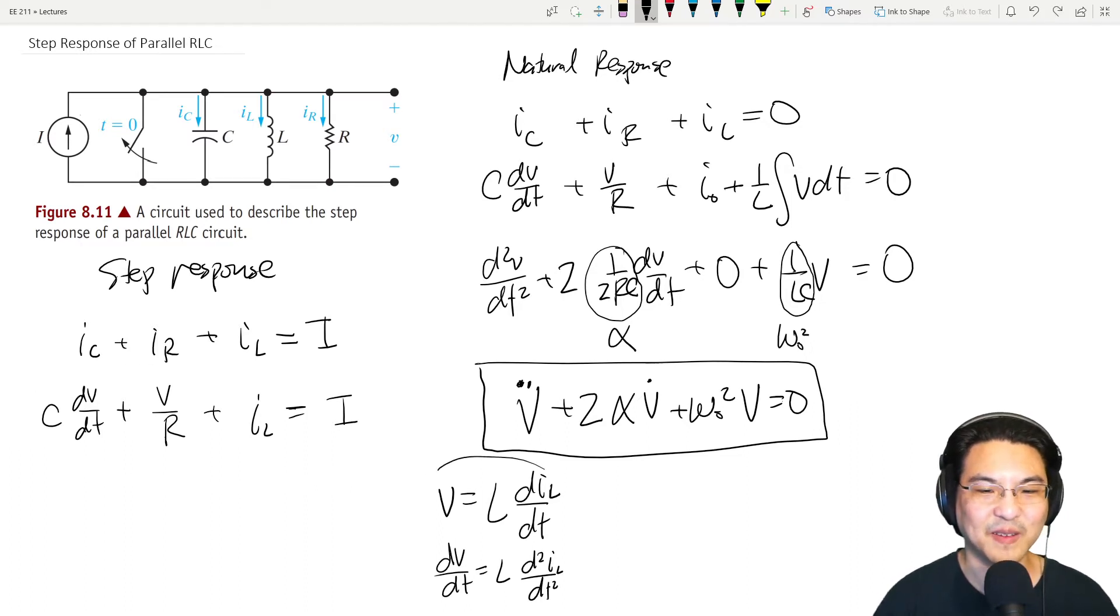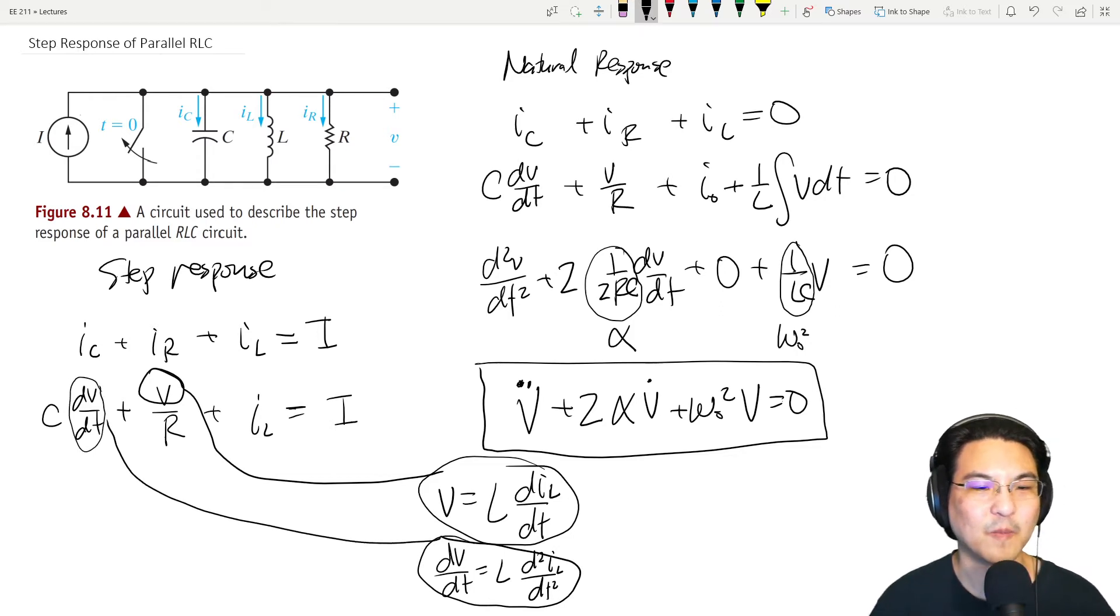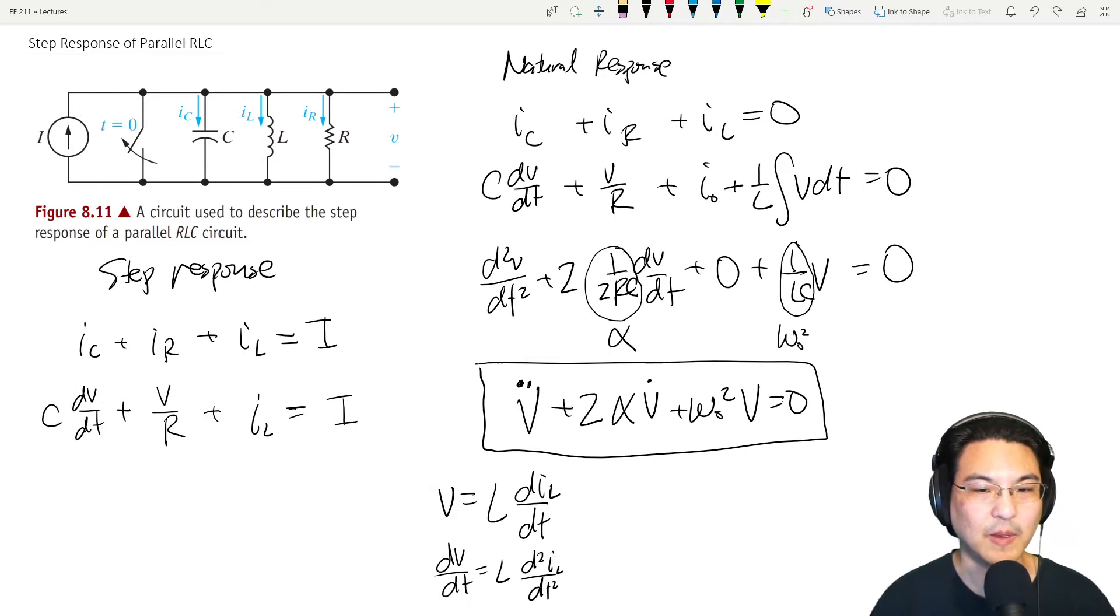So take a look over here. V can go right there. dV/dt can go right here. So let me substitute those in. So C dV/dt, which is this. So that's LC d squared I dt squared, like this. Now V is this. So plus L over R di/dt. And I'll just leave this alone.